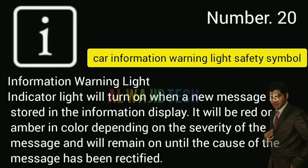Number twenty: Car information warning light. The information warning light indicator will turn on when a new message is stored in the information display. It will be red or amber in color depending on the severity of the message, and will remain on until the cause of the message has been rectified.